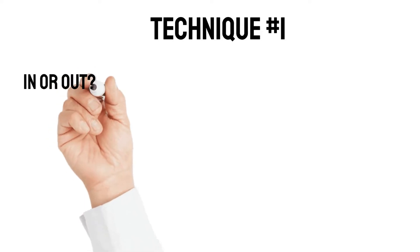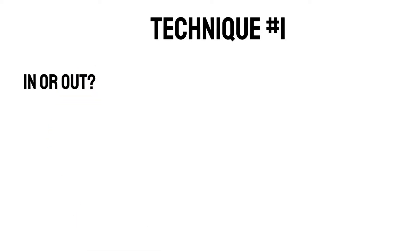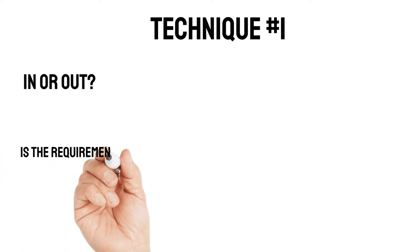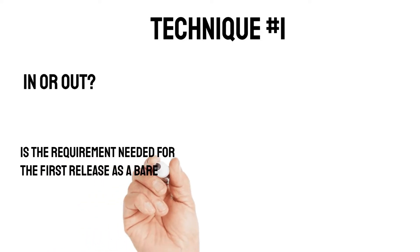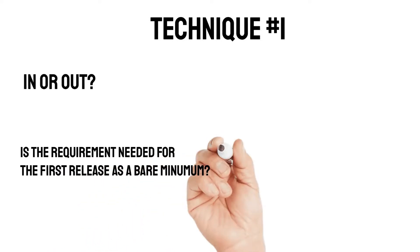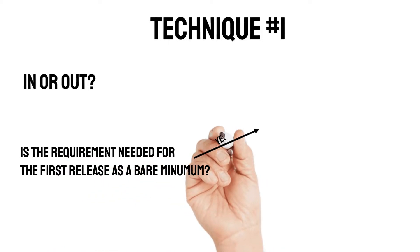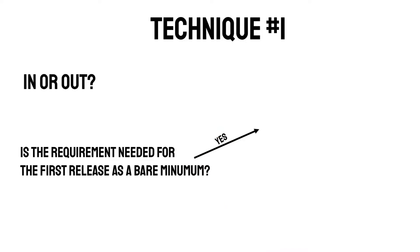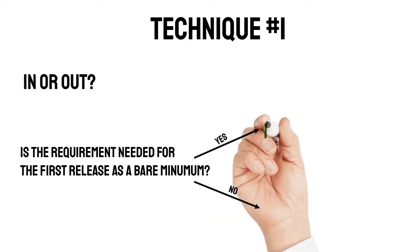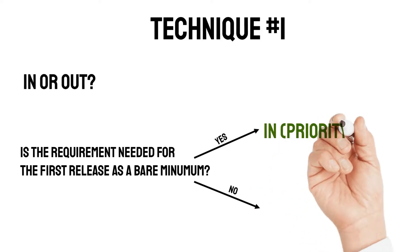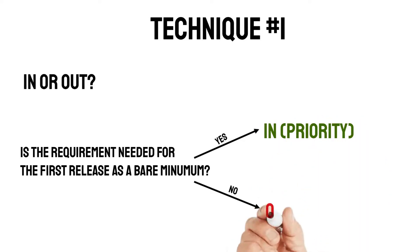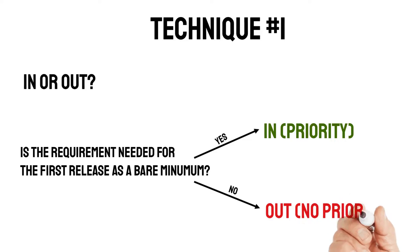Let's get started right away with technique number one. Technique number one is called In or Out. This technique is very simple — you just have to ask yourself: is this requirement needed for the first release as a bare minimum? Yes or no? If the answer is yes, then this requirement is in, meaning it has priority. If the answer is no, then the requirement is out of scope, meaning no priority.